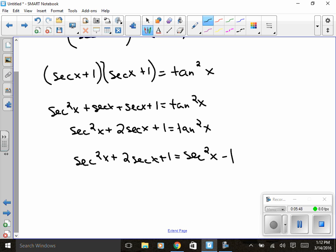Again, I'm going to move everything so it's all on one side. The secant squared of x, you get rid of it, so you're left with two secant x plus two equals zero.